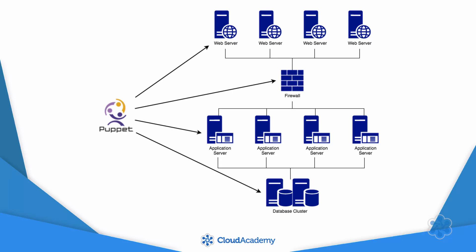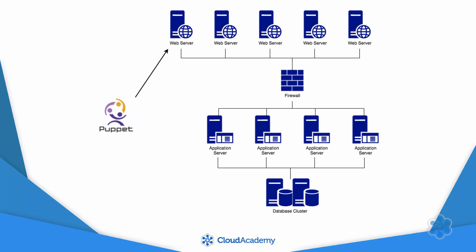How? Puppet lets you define configurations for all of these components, and then you can tell Puppet to make it so. The benefits of doing this really kick in over time. For example, if you need to add another web server, then you can just drop in a new server and tell Puppet to turn it into a web server that's configured in the same way as all of the other web servers.